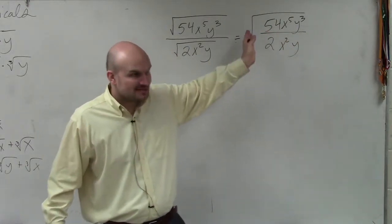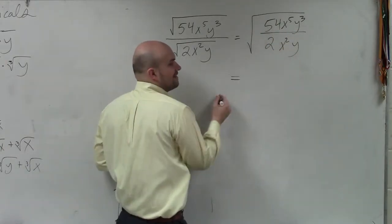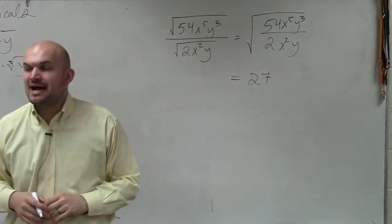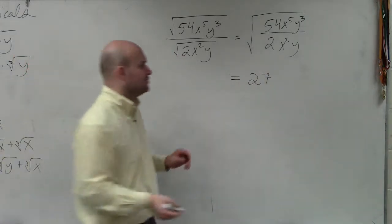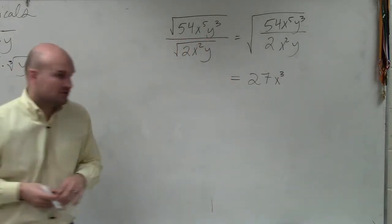Because that's what your last test was on, was simplifying rational expressions. And if you were to do that, 54 divided by 2 is 27. x to the fifth divided by x squared is x cubed. And y cubed divided by y is going to be y squared.